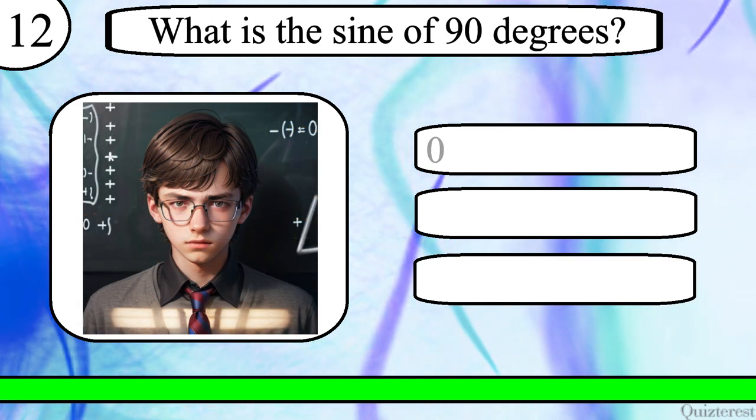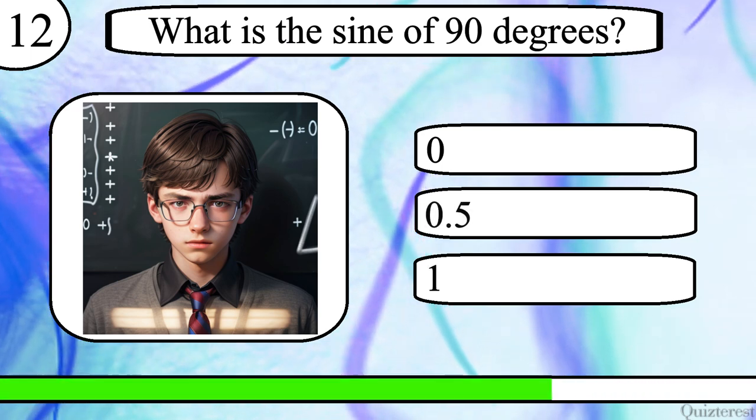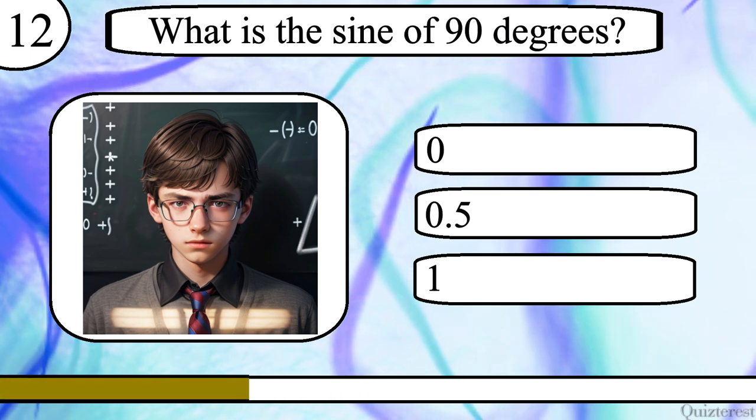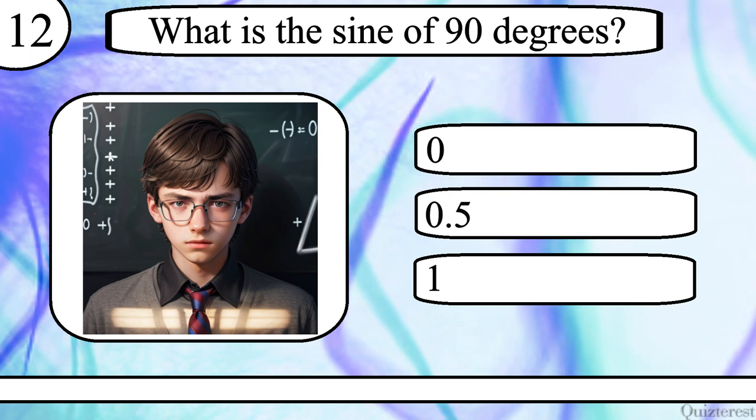Question 12. What is the sine of 90 degrees? 0, 0.5, or 1? The correct answer is 1.